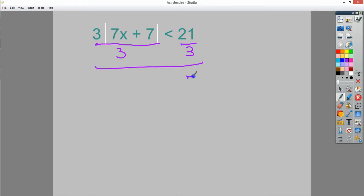So 21 divided by 3 is 7. This stays less than. You end up with the absolute value of 7x plus 7. Now the absolute value is by itself, so I can do the split that I intended to do from the beginning.